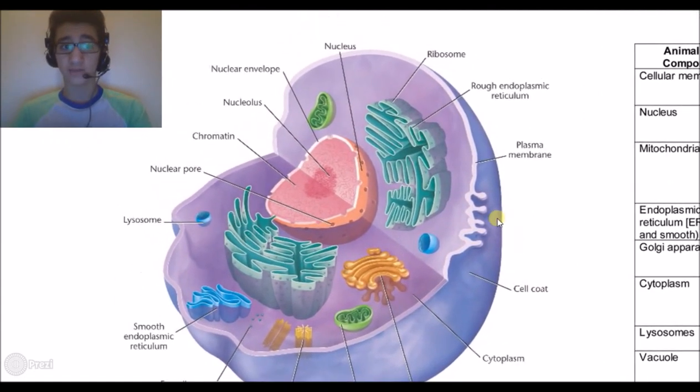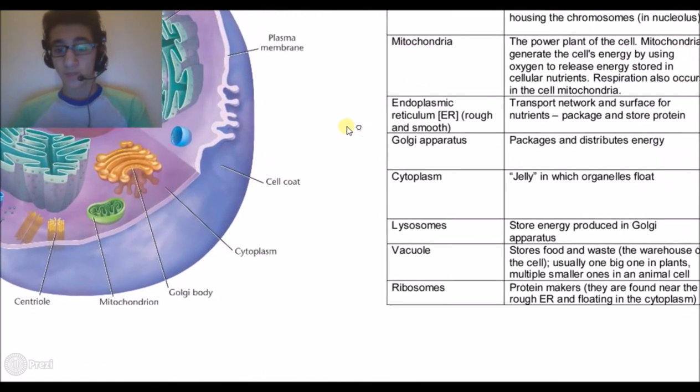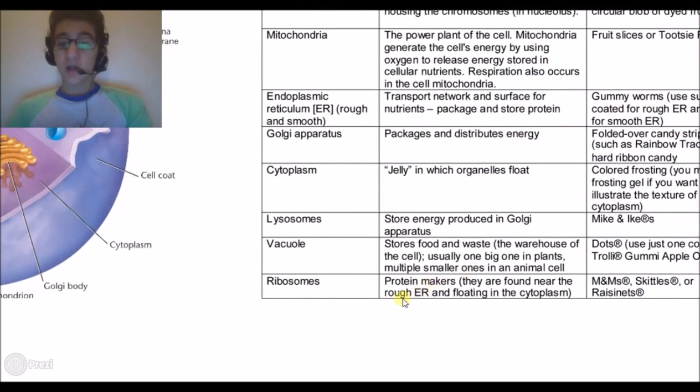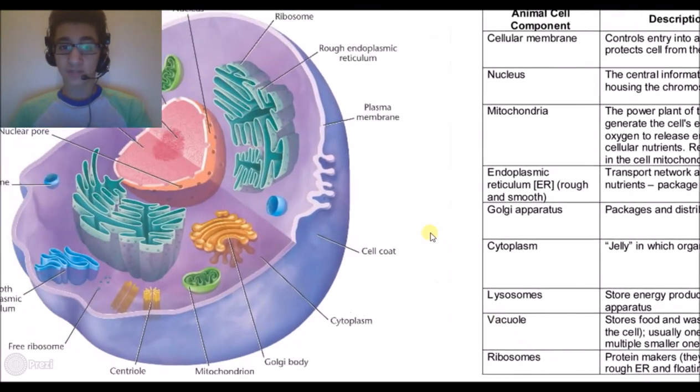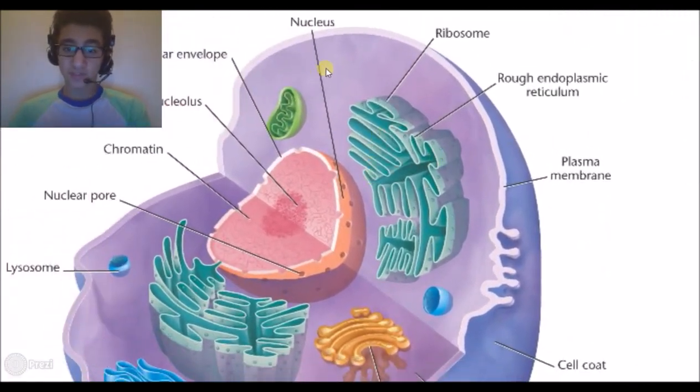The ribosomes make protein and they are found near the rough endoplasmic reticulum and they float around in the cytoplasm. The rough endoplasmic reticulum has ribosomes, and these are free ribosomes because they're just floating around the cytoplasm.